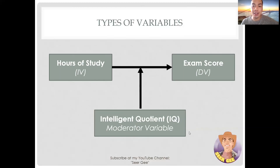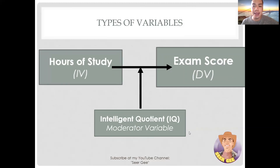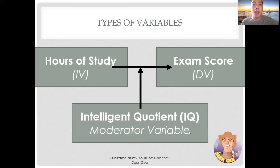In this example, as illustrated, our dependent variable is the exam score of the students, which is affected by the number of hours the students spend studying, which is our independent variable. The presented scenario could possibly have a different result depending on the IQ of the student. Therefore, IQ becomes the moderator variable because its presence could modify or affect the relationship between hours of study and exam score, which is our IV and DV respectively.